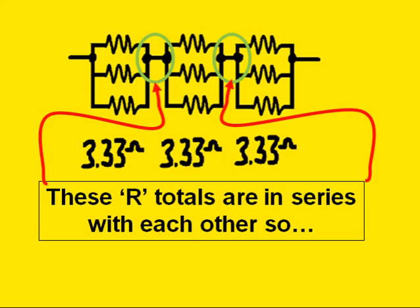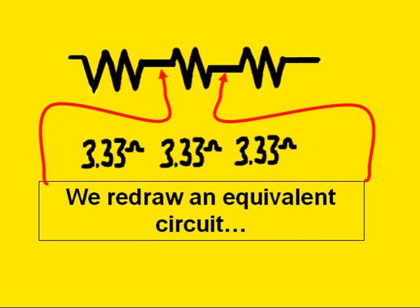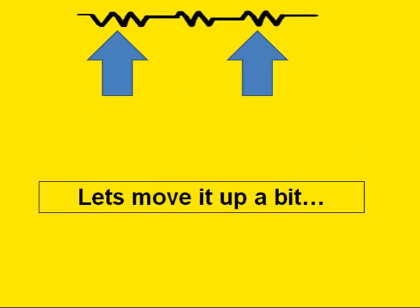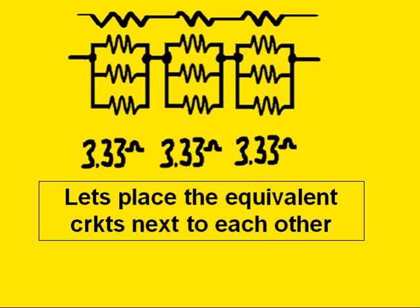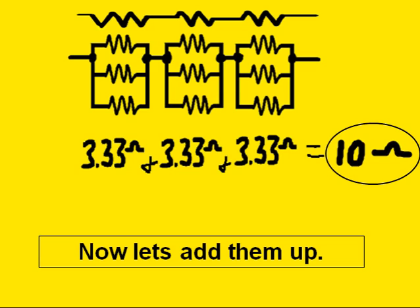So, we redraw an equivalent circuit. Let's move it up a bit. Let's place the equivalent circuits next to each other. And now, let's add them up. 3.33 plus 3.33 plus 3.33 is about 10 ohms.